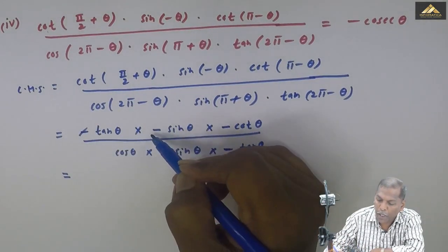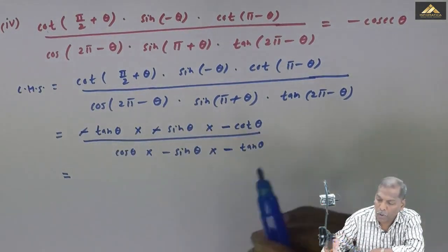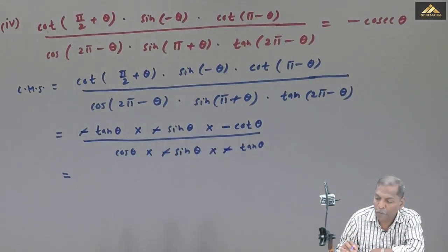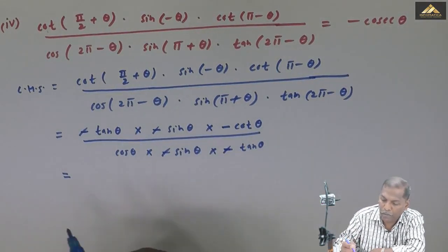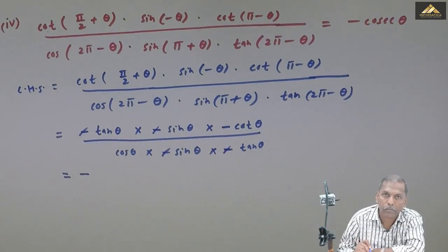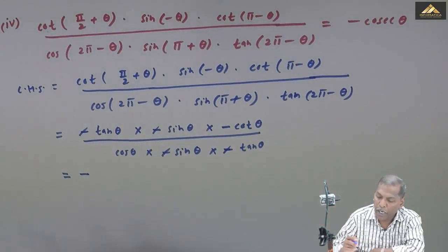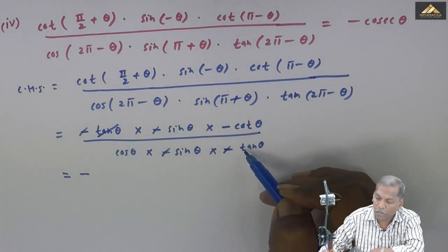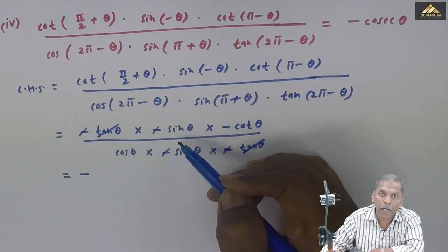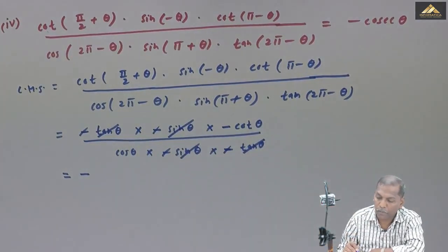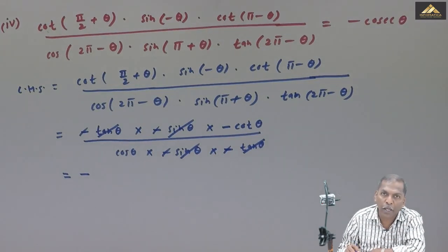This equals minus, minus, plus, and again minus, minus, plus, so we are left with only one minus sign. Then tan theta is cancelled with tan theta, so we are left with cot theta upon cos theta with minus sign.